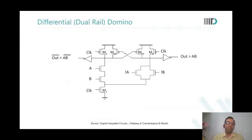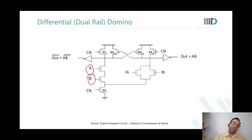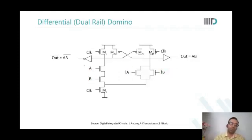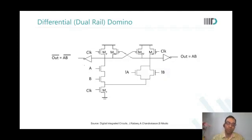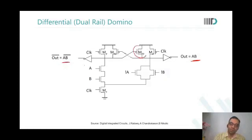There is also differential or dual-rail domino, where A, B, A-bar, and B-bar are all used — possibly for XOR and XNOR implementations — and you get differential outputs. Differential gates are used only where you need that differential output to be driven. Here you can also get the inverting output side.